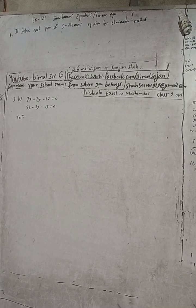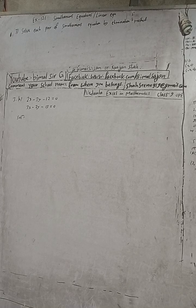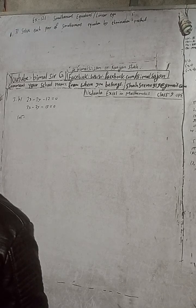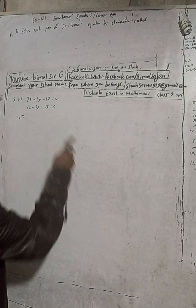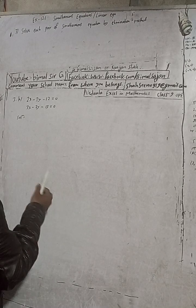Hi Class 9 and 10 students, welcome back to Vimalsearch YouTube channel. This is question number 3h, exercise 12.1 — simultaneous equations or linear equations — from Vedant Excellent Mathematics Class 9. The question is: solve each pair of simultaneous equations by elimination method. So we have to solve this by elimination method, not substitution.